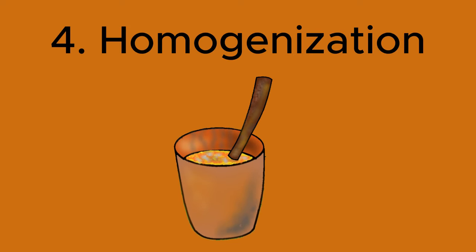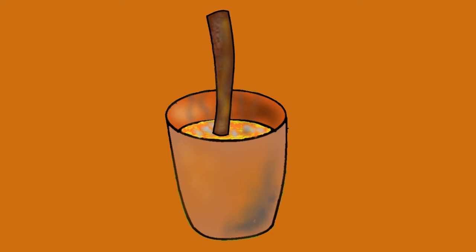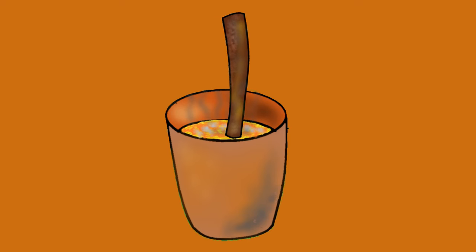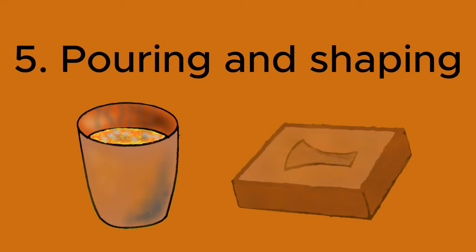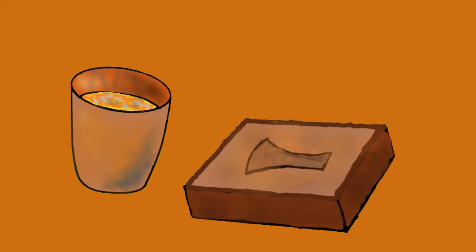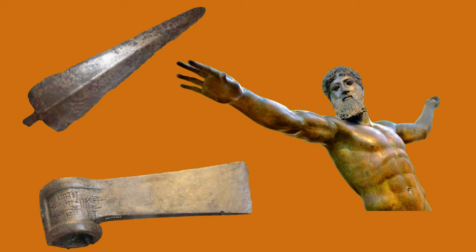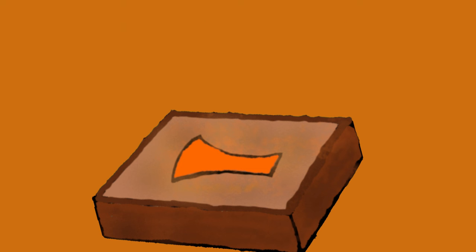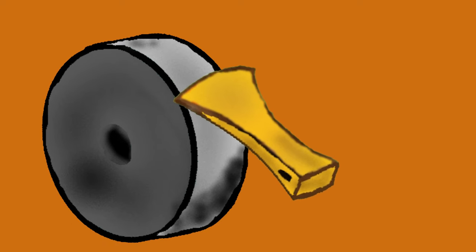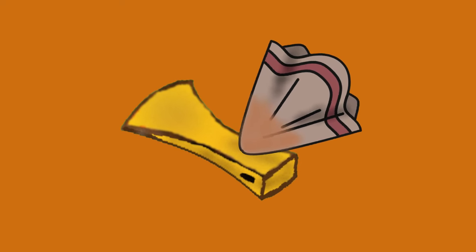Fourth, homogenization: the molten bronze is thoroughly mixed to ensure an even distribution of tin throughout the alloy. This step is essential for achieving consistent properties in the final product. Fifth, pouring and shaping: the molten bronze can be poured into molds or shaped as needed, including casting into sculptures, tools, or other objects. Sixth, cooling and solidification: the bronze cools and solidifies in the molds, with the cooling process carefully controlled to prevent defects. Seventh, finishing: the solidified bronze may undergo polishing, grinding, or patination to achieve the desired appearance and surface texture.